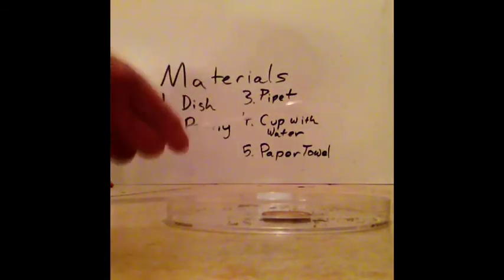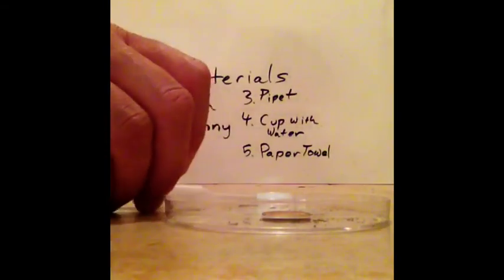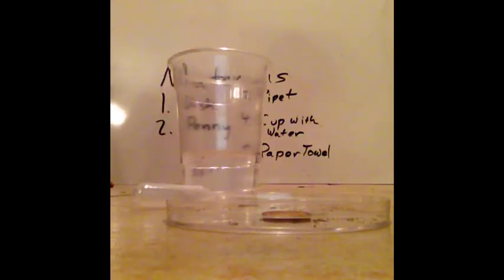A pipette. This is a pipette. You squeeze it, and you can measure how much drops you're going to put onto the penny. How many drops. And a cup of water, and then a paper towel, which you can use to clean up or dry the penny or whatever you decide.